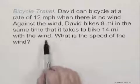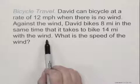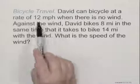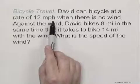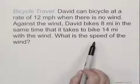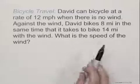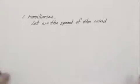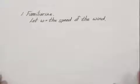If you're bicycling with the wind, that means it's behind you. You'll be able to go faster. You take your rate of 12 miles per hour and you add the wind speed. Since we're asked to find what the speed of the wind is, we will define that variable. We will let w equal the speed of the wind.